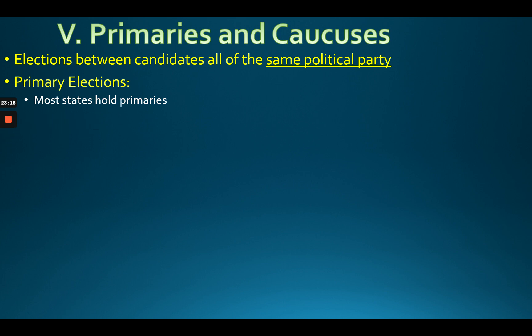Let's talk about the primary. Both parties can't let everybody run — if you have too many candidates, the vote gets divided and the other party wins. So primaries narrow down who's going to run. Democrats choose one candidate and Republicans choose one candidate, then throw all their money behind that person. The primary happens in the spring of an election year.